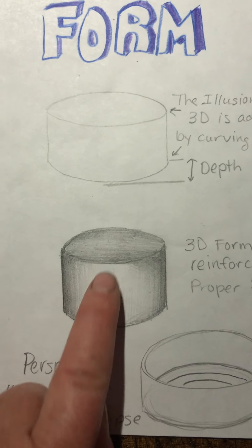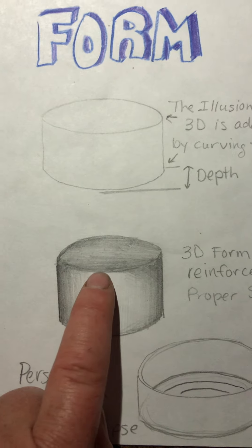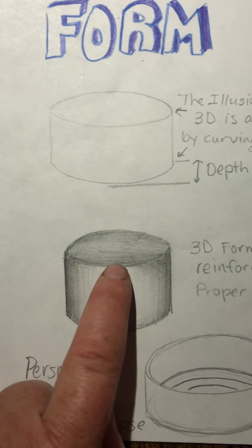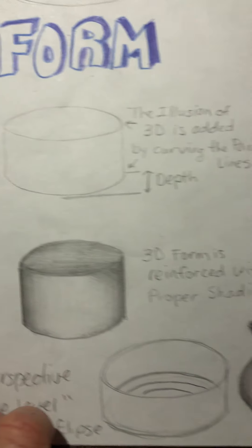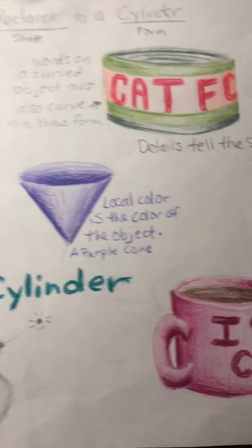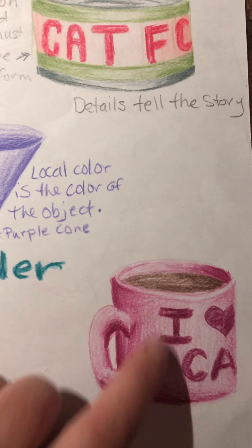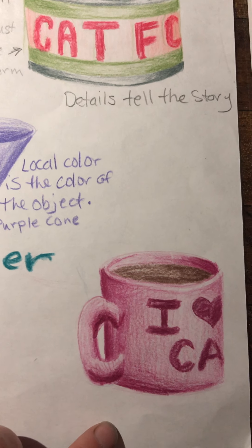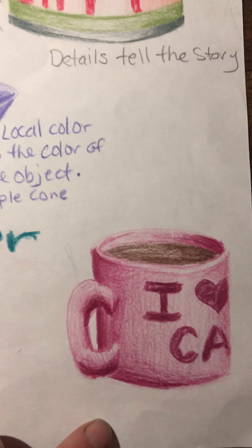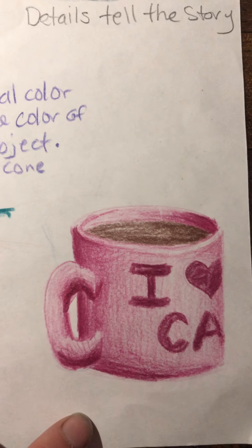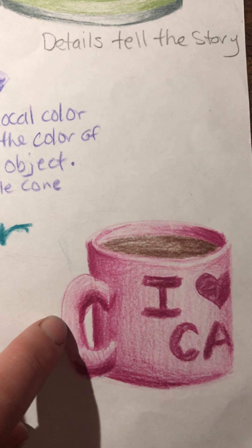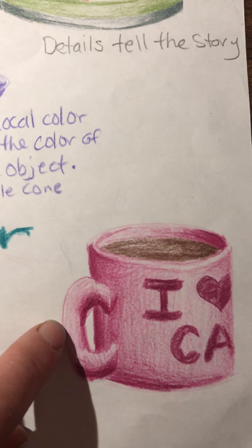A lot of times, if the light is coming from the front, it'll catch the top lip and cast a shadow. Other times, that shadow will be because there's something in it. When you're doing an object like a coffee mug, remember that the handle is a cylinder too.